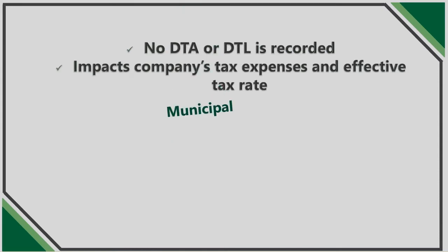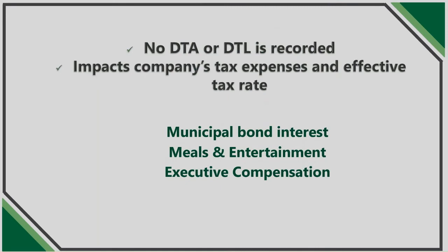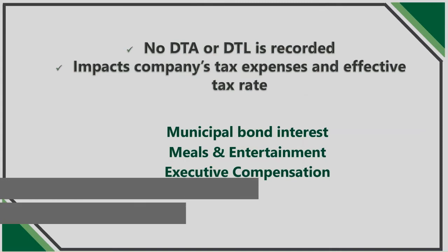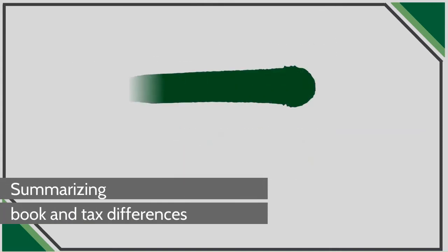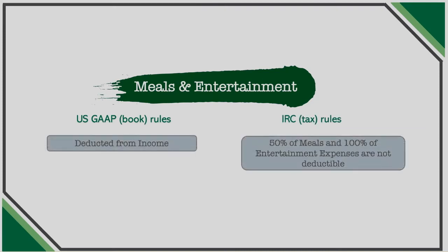A few simple examples of permanent items include interest on municipal bonds, meals and entertainment, and executive compensation, and we're going to use those three throughout this video. Meals and entertainment are deductible business expenses for book purposes. However, IRC Section 274 limits the deductions for certain food and beverage costs to 50%. Entertainment costs are not deductible, and the non-deductible portions are added back to income for tax purposes. This creates a permanent book-tax difference.